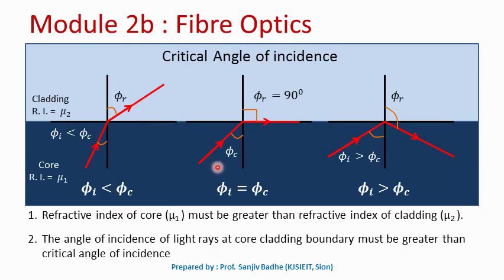For a particular angle of incidence phi i equal to phi c, the angle of refraction will become 90 degrees. This is the critical angle. The critical angle of incidence is defined as the angle of incidence at the core-cladding boundary for which the refracted light ray travels along the core-cladding boundary. In other words, it is the angle of incidence at the core-cladding boundary for which the angle of refraction is 90 degrees. Now, if you adjust the angle of incidence to be greater than the critical angle, then the angle of refraction will be greater than 90 degrees, and therefore the light ray will be reflected back into the core. This is called total internal reflection.